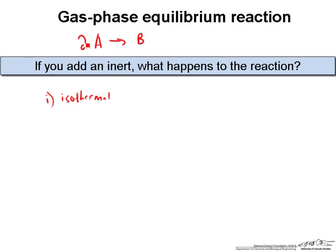This was a gas phase reaction of 2A going to B, and we should draw this as being reversible. The question basically dealt with what would happen if you added an inert to that system.